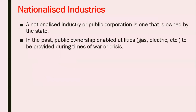A nationalised industry or public corporation is one that is owned by the state. Examples of that would be things like the NHS — they are a publicly owned organisation. In the past, public ownership enabled utilities such as gas, electric, etc. to be provided during times of war or crisis. The government felt that if it was to leave it to the disciplines of the free market, to private shareholders, they would raise prices and put people in an even worse position. So the government felt it best to take ownership of what they called the commanding heights of the economy — the strategic industries which were central and essential to the running of an economy.